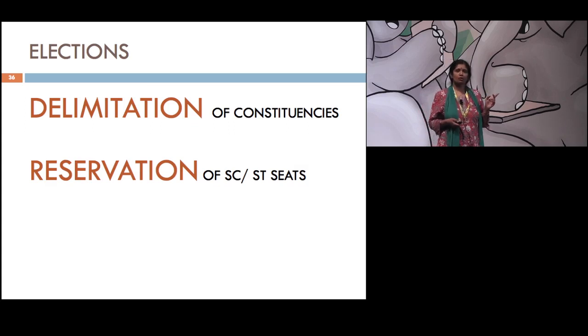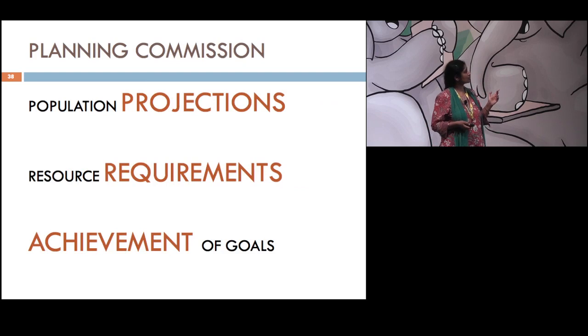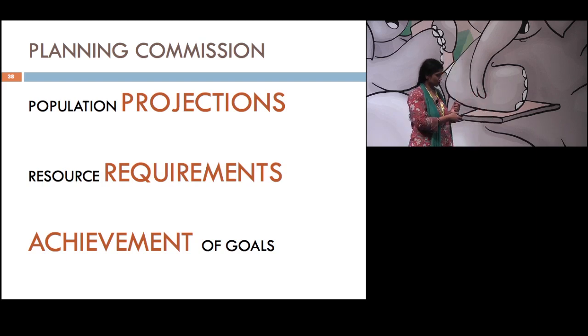Then all other surveys, almost all other surveys base their sampling frames on the census enumeration blocks. And that's why I think we'll be expecting new sampling frames very soon. The planning commission, of course, depends entirely on our data for projections, for resource requirements to check whether the goals have been achieved or not. And there are three small examples, specific examples of impacts of census data that I'd like to talk about.